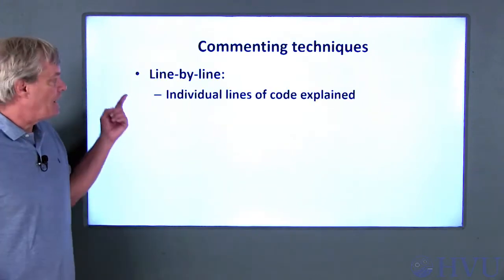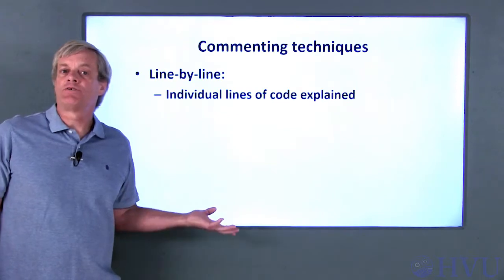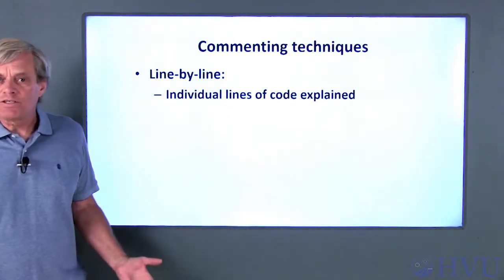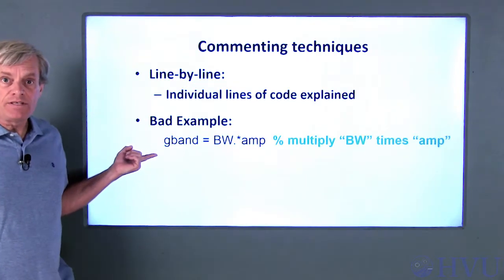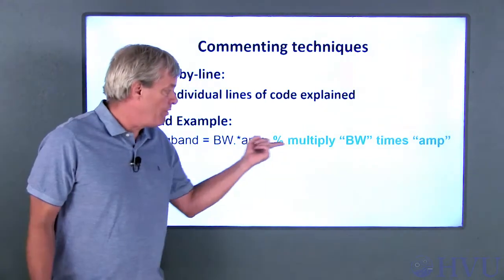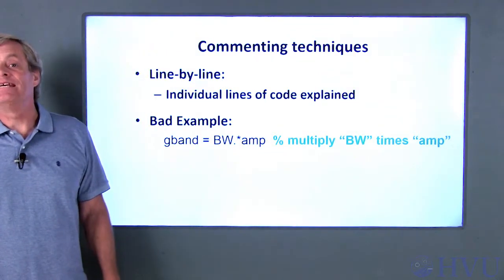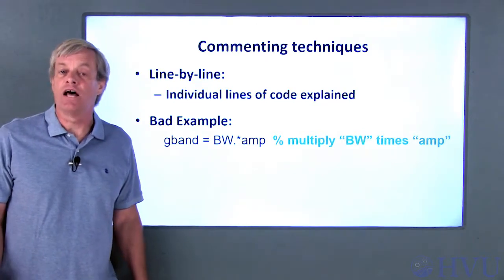One useful technique is called line-by-line commenting. This involves writing a comment that describes a specific line of code. Make sure your comments are meaningful. Here's an example of a bad single line comment. All this comment does is restate what the code already says. Comments are intended to describe the intent of the code in terms that would make sense to a relatively knowledgeable user.